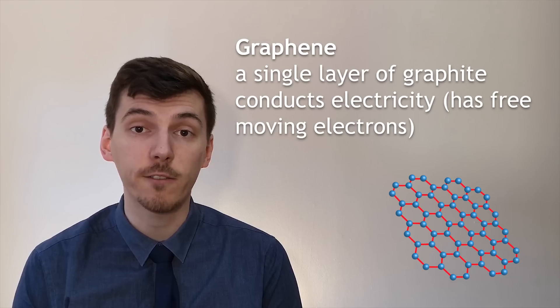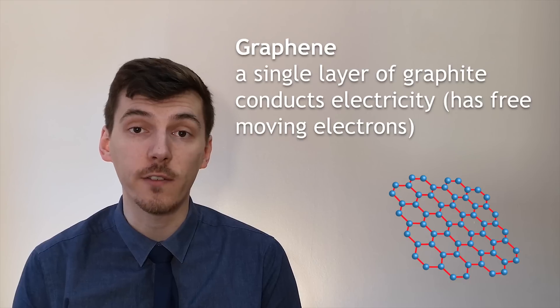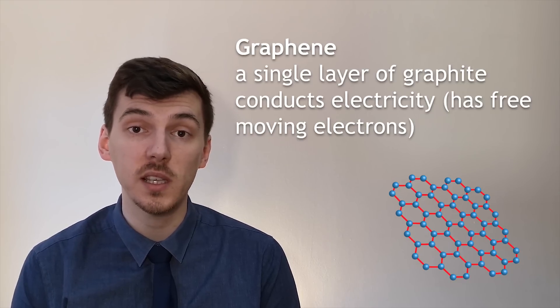There are three other types of carbon structure that you need to be aware of. Graphene, which is a single layer of graphite and has the same properties as graphite does too.